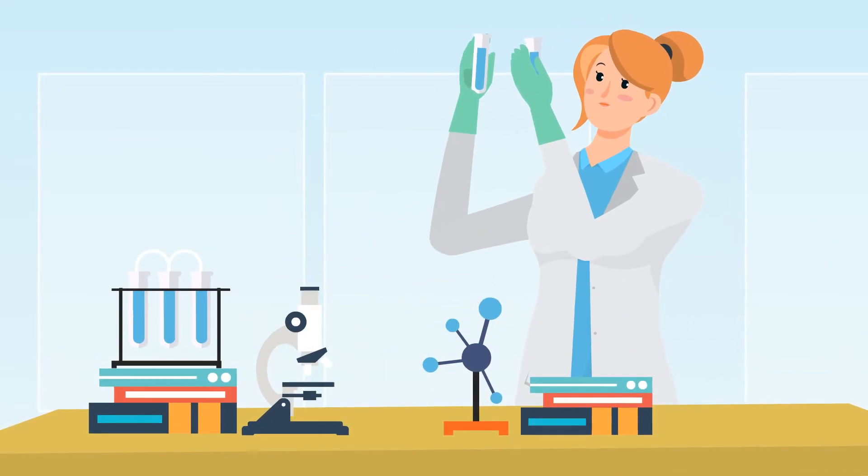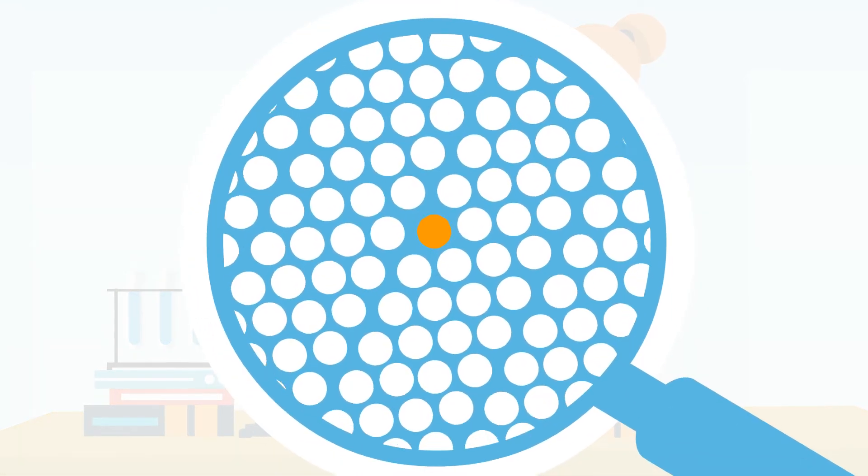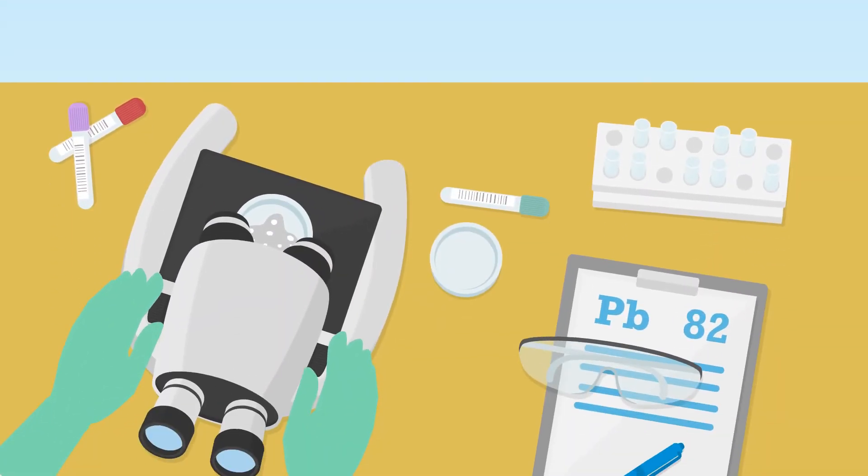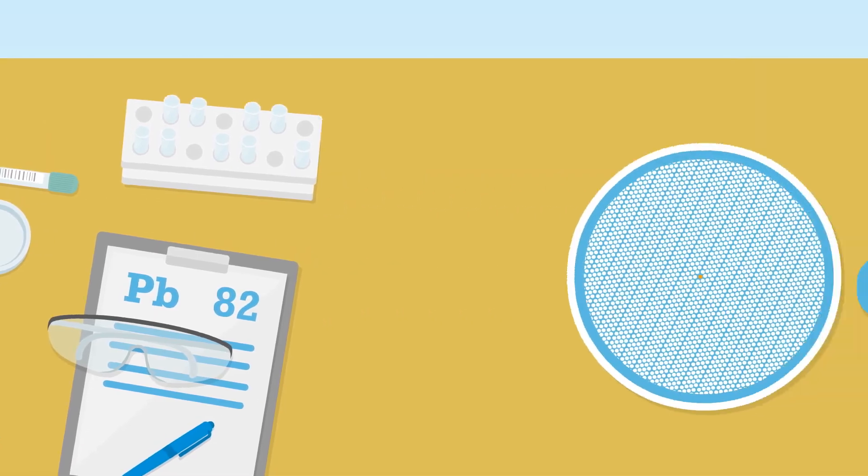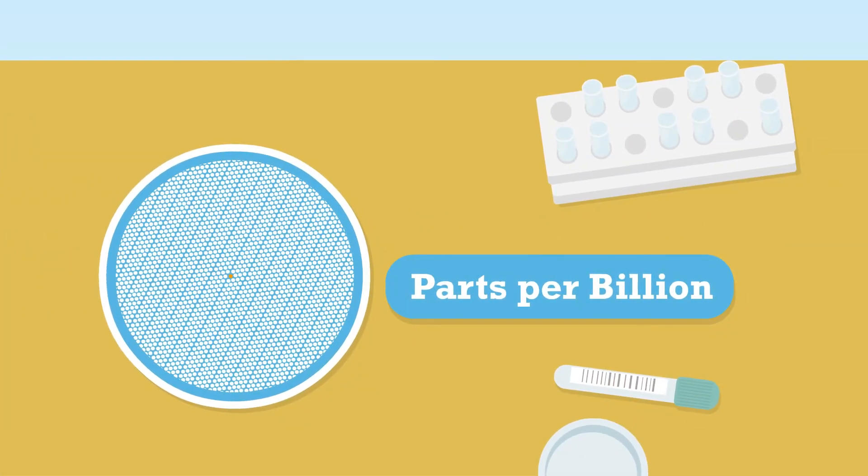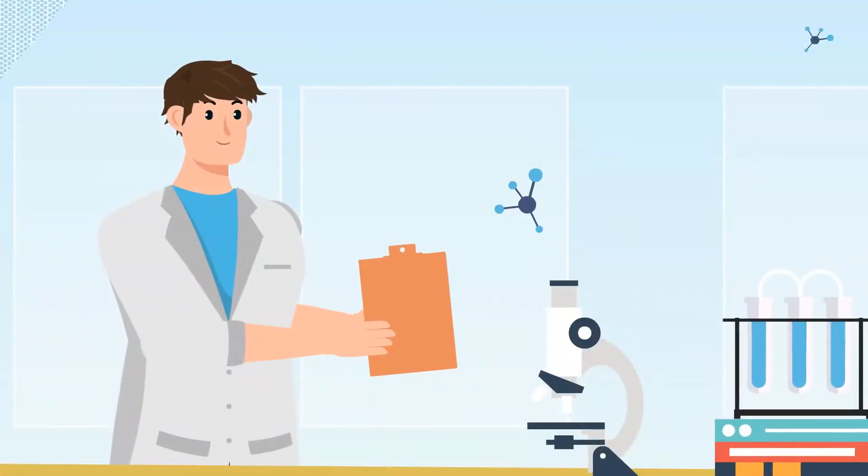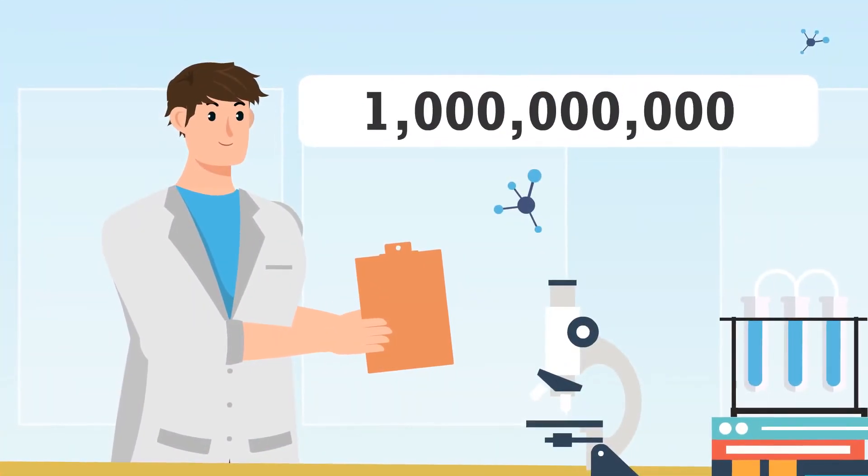But there are many other contaminants that are toxic at levels far less than that. When scientists are measuring things like lead, they use parts per billion. That's one part in a billion parts of something else. And remember, a billion is a thousand millions.